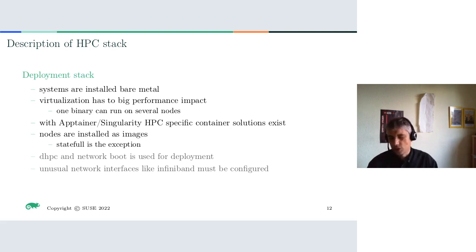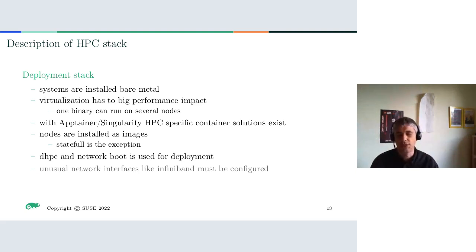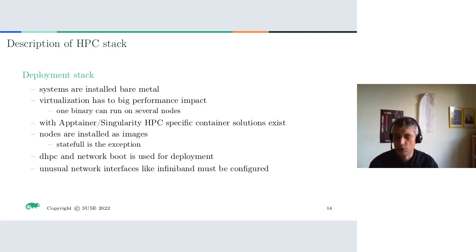Other deployment systems like xCAT also push images to nodes. Stateful installation of HPC compute nodes is really the exception. The system always needs control of DHCP and DNS for proper name resolution, and you always do a network boot because if you need to reinstall thousands of nodes you don't want to go to each one manually. We also have to keep in mind that we cannot fully rely on DHCP because of unusual network topologies and InfiniBand configuration, which cannot be done by DHCP.